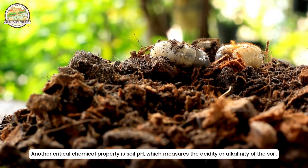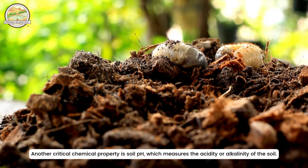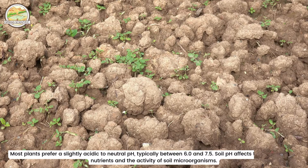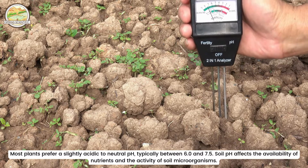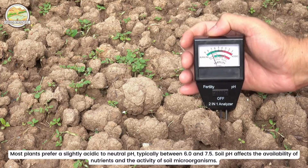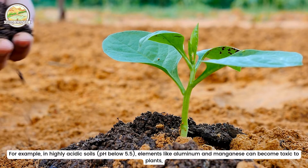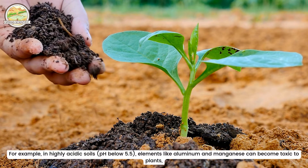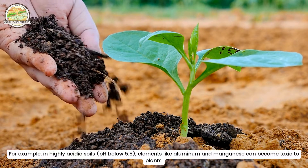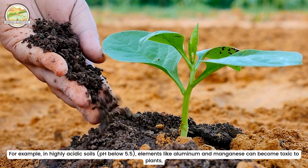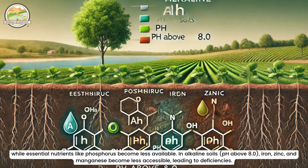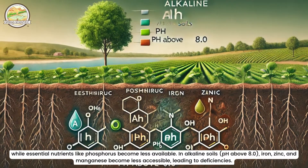Another critical chemical property is soil pH, which measures the acidity or alkalinity of the soil. Most plants prefer a slightly acidic to neutral pH, typically between 6.0 and 7.5. Soil pH affects the availability of nutrients and the activity of soil microorganisms. For example, in highly acidic soils with a pH below 5.5, elements like aluminum and manganese can become toxic to plants, while essential nutrients like phosphorus become less available.